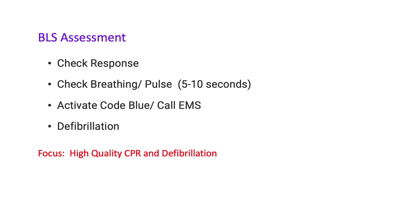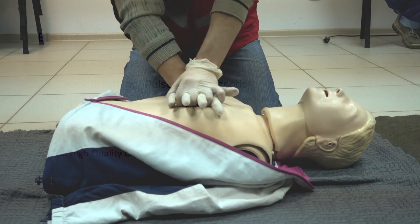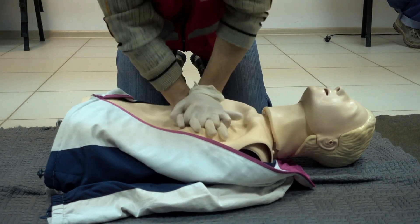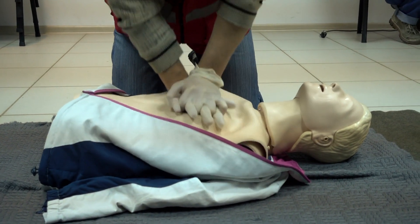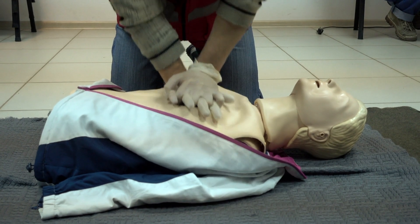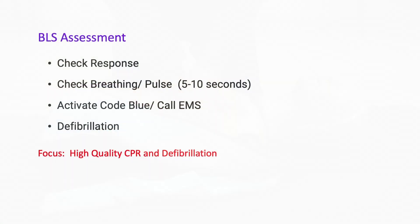Start pushing hard and fast on the center of the chest at a rate of 100 to 120 pushes per minute. Remember to allow full chest recoil. Don't interrupt CPR for longer than ten seconds, and do not hyperventilate. You want to give just enough air to see visible chest rise.